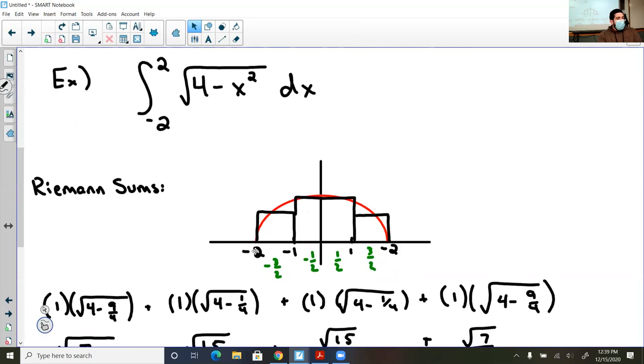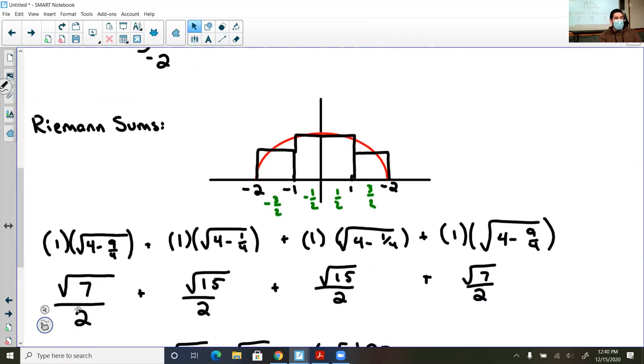So the width or the dx of this rectangle is 1. And then the height, the f of x, the output, would be when I plug negative 3 halves into this function, and I got the square root of 4 minus 9 fourths, or square root of 7 over 2. And then I did the same thing over here from 0 to negative 1. That is a dx, a change in my x values of 1. And it has a height of, well, when I plug in negative 1 half, I got 1 fourth, combine, simplify, square root of 15 halves.